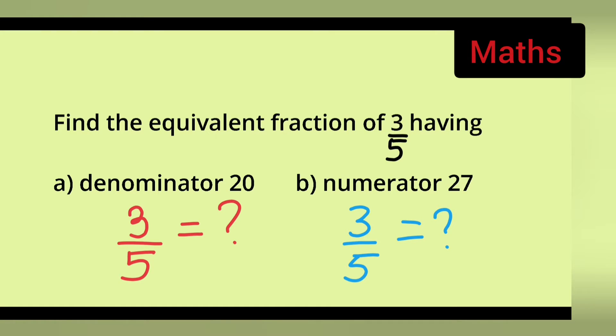In today's class of mathematics, today's question is taken from class 6 mathematics. The question is: find equivalent fraction of 3 upon 5 having denominator 20, and the second one will be numerator 27.